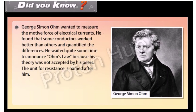George Simon Ohm wanted to measure the motive force of electrical currents. He found that some conductors worked better than others and quantified the differences. He waited quite some time to announce Ohm's Law because his theory was not accepted by his peers. The unit for resistance is named after him.